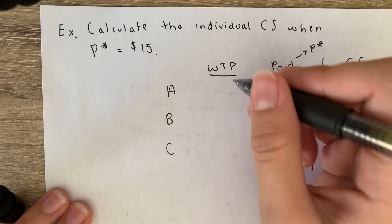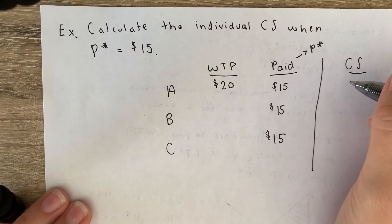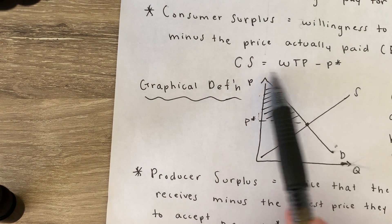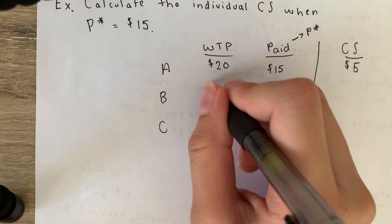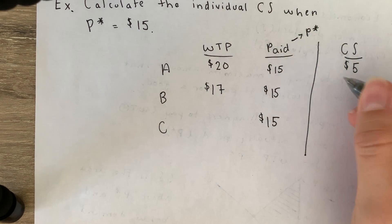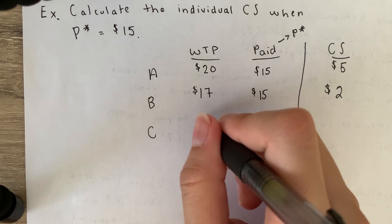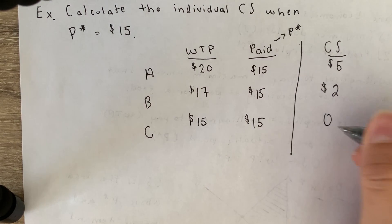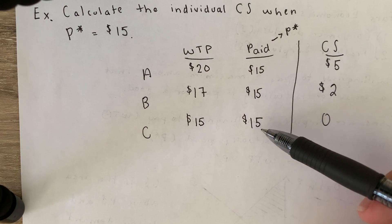Consumer A was willing to pay $20 but only paid $15, so their surplus is $5 (WTP minus P star: 20 minus 15). Consumer B was willing to pay $17 and paid $15, so their surplus is $2. Consumer C was willing to pay $15 and paid $15, so there is no surplus — they just broke even.